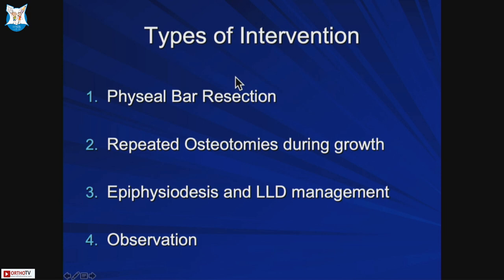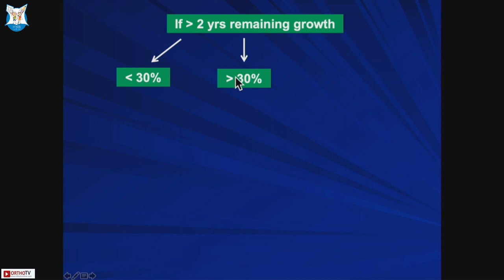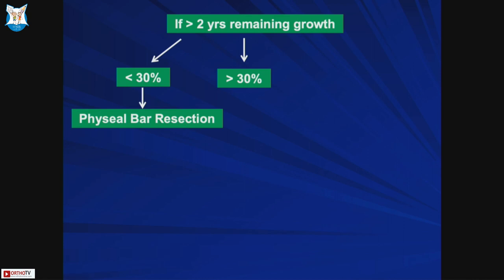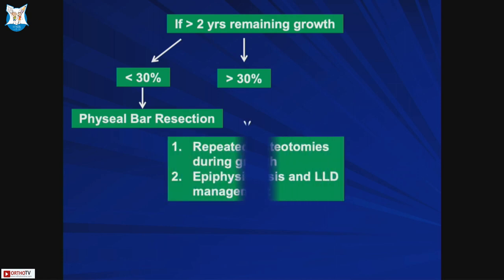Management options include bar resection, ignoring the bar and addressing the deformity or limb length discrepancy, completing the physis with epiphysiodesis and managing deformity, or simply observing if the patient is near skeletal maturity. If more than two years of growth remain, estimate the bar size. If less than 30%, it's a good candidate for resection, especially if post-traumatic. If more than 30%, you may need repeated osteotomies during growth.